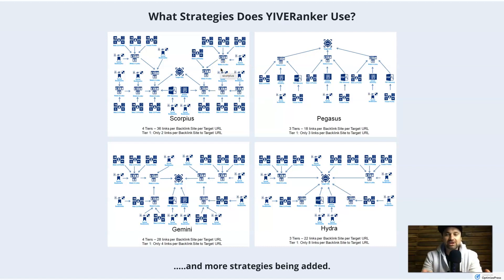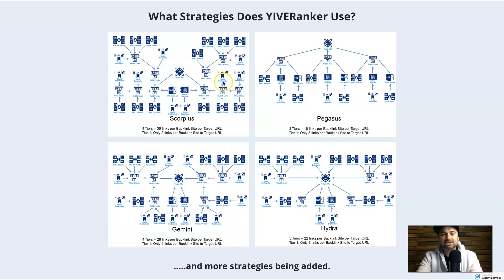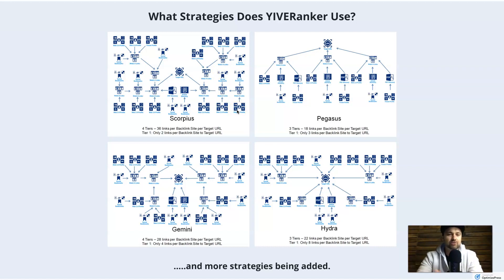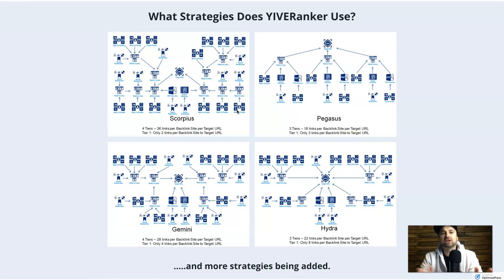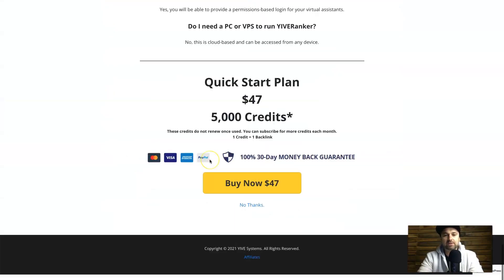One thing people often misunderstand about backlink building is they think you need to put as many backlinks as fast as possible, which is not the case. Inside Yive Ranker he's actually slowed it down so the links are stretched out over around 30 days. Every day it strengthens gradually, instead of just dumping a whole bunch of links at once — it's actually going to look like your content is naturally getting attention.